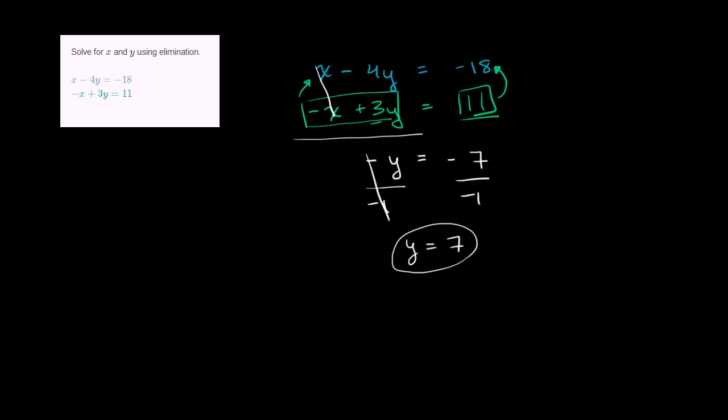Let's use the top equation. So we have x minus 4 times y. But now we know that y is 7. We know that y is 7 at the point that satisfies both of these equations. 4 times 7 is equal to negative 18. Let's simplify it. You get x minus 28 is equal to negative 18.